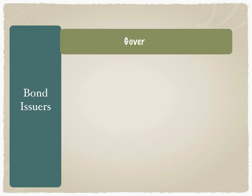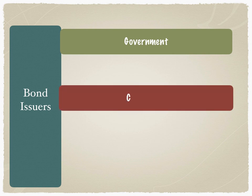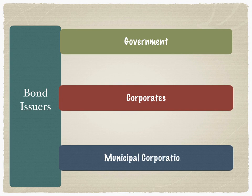Bond issuers could be governments — central governments, federal governments — or corporates, which have to be credit rated, as well as, in the United States markets, municipal corporations. In this specific video, we're going to take a look only at bond issuances of the federal government — the government borrowings of the United States.